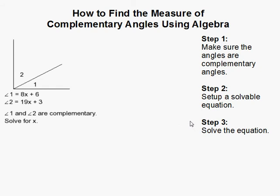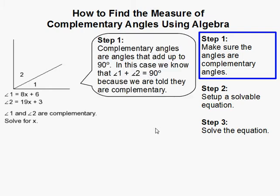How to find the measure of complementary angles when we have algebraic expressions involved. The first thing you have to do is find out if the angles are complementary. In this example, we're told that angles 1 and 2 are complementary angles. So we know that these two angles should add up to 90 degrees because that is the definition of complementary angles.